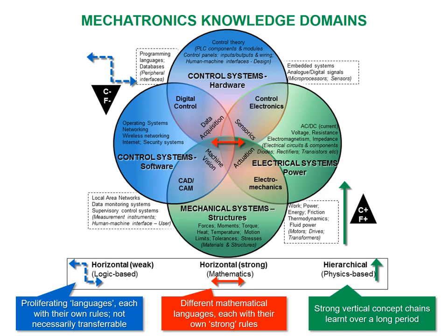In the center, and applying across the spectrum, is mathematics, which is a strong horizontal knowledge structure. This simply means that there are different mathematical languages which you could apply to the same phenomenon, and each language has strongly recognizable concepts or rules that are not necessarily applicable to a different mathematical language. The upper left are regions underpinned by logic — the disciplinary basis of programming and control systems — which is a weak horizontal knowledge structure, meaning there are choices that are context dependent, like languages themselves or social science.